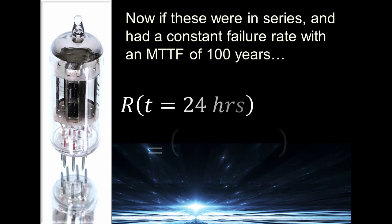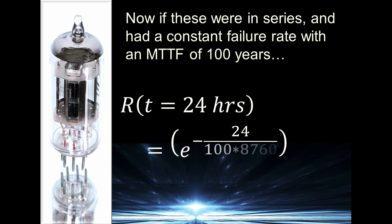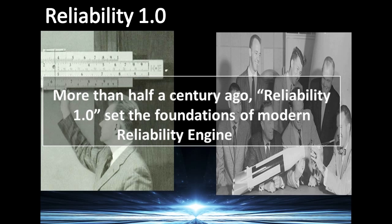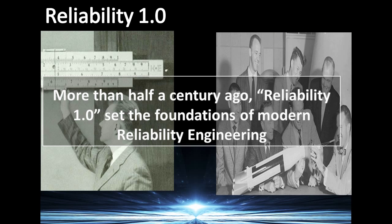Just for fun, if they were all in series and had a constant failure rate — we all know that they don't, but just for fun — if we assume those tubes had a constant failure rate, all in series, and had about 17,500 of them, what would your reliability be for, let's say, 24 hours? About 62 percent. The reason I brought up the computer is we start putting together more complex systems. In the 1940s and 1950s, most of them coming out of the DOD, Department of Defense, you start seeing some of the early papers and early standards put together on reliability. That's what I would term as Reliability 1.0.